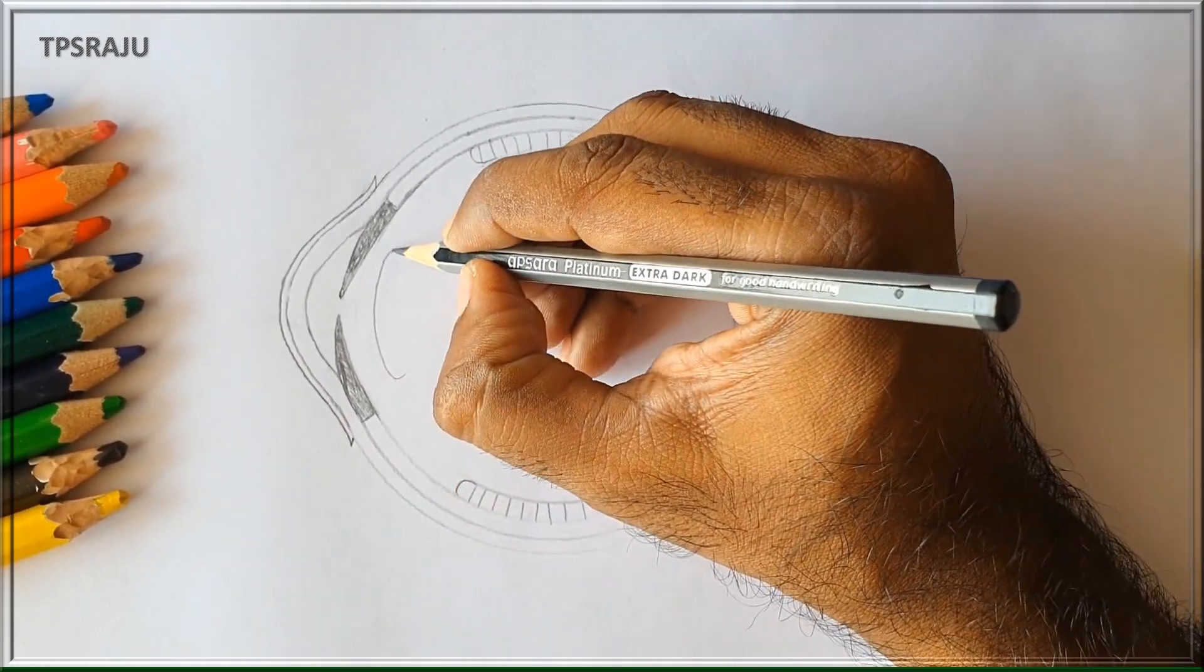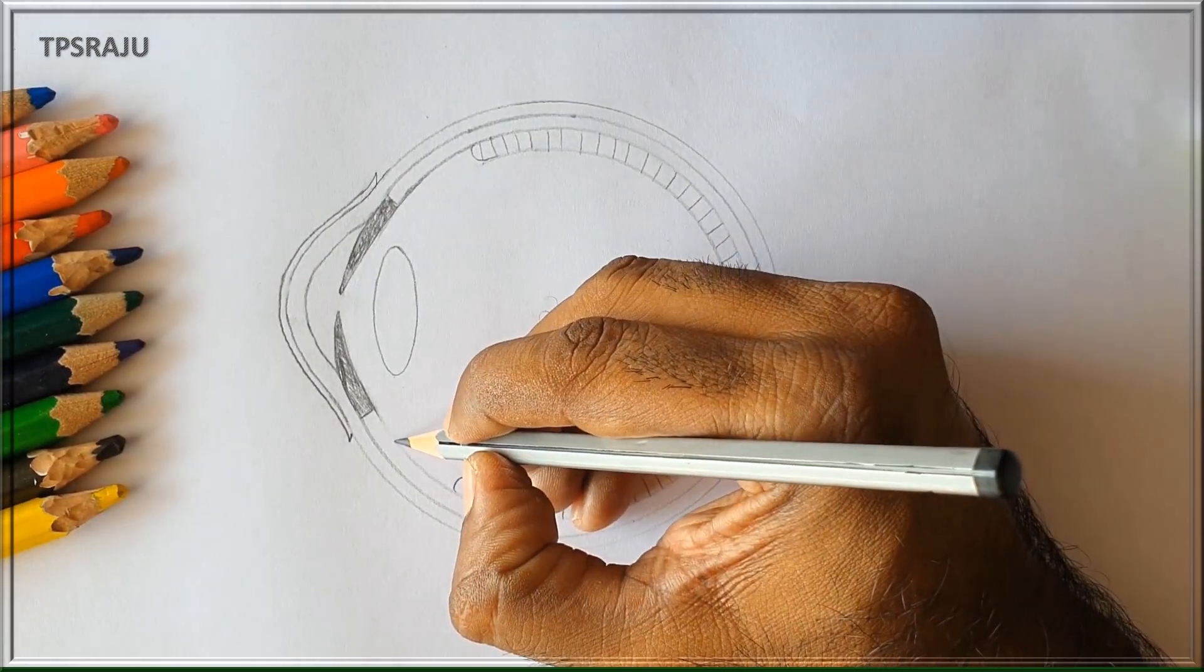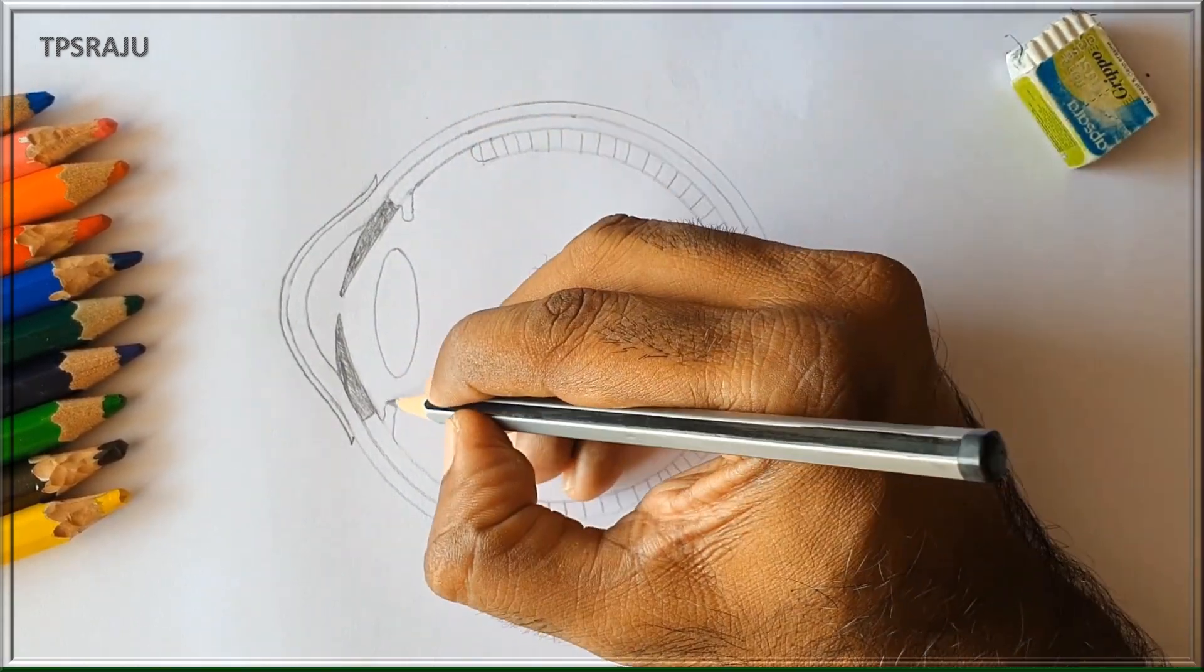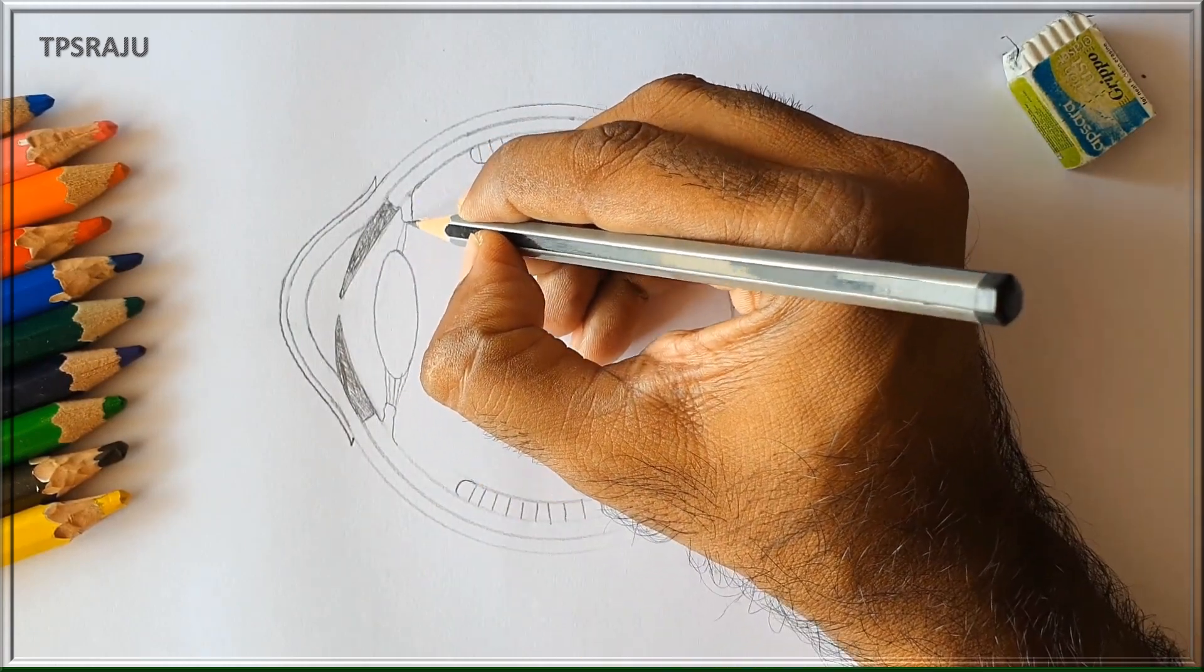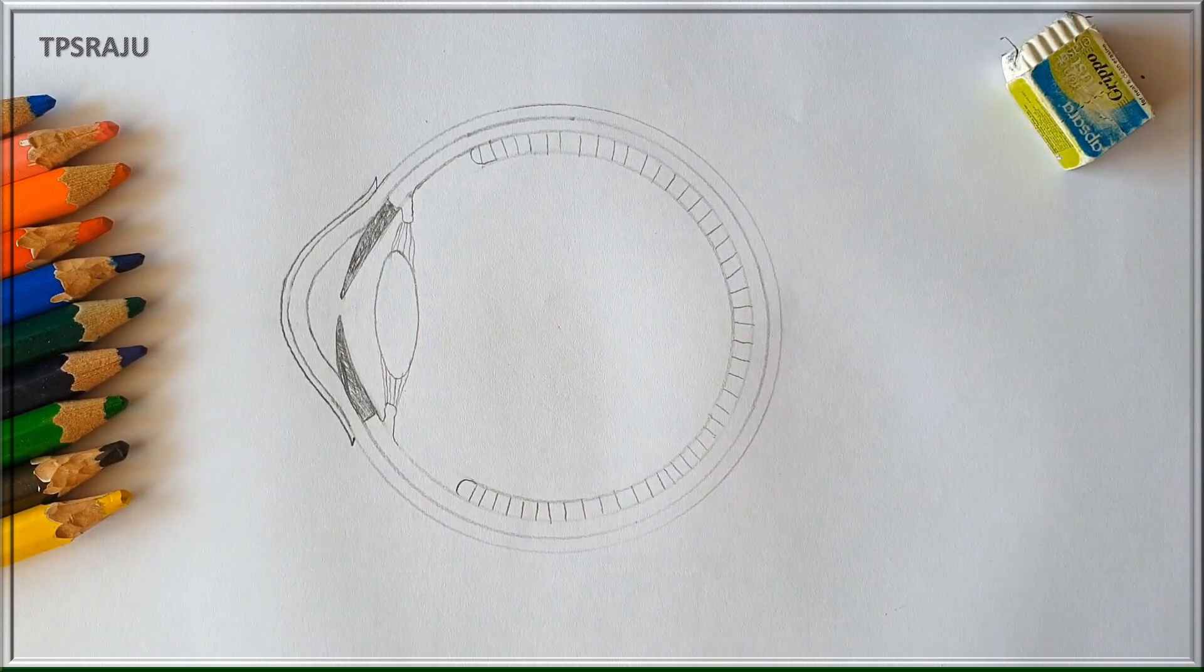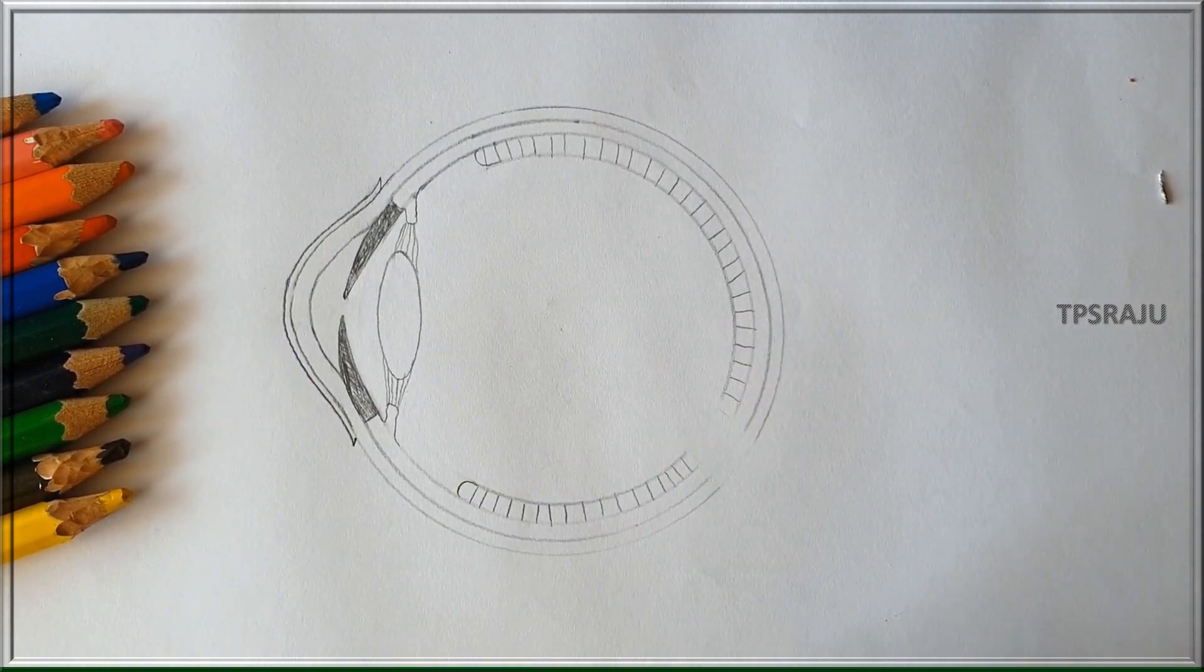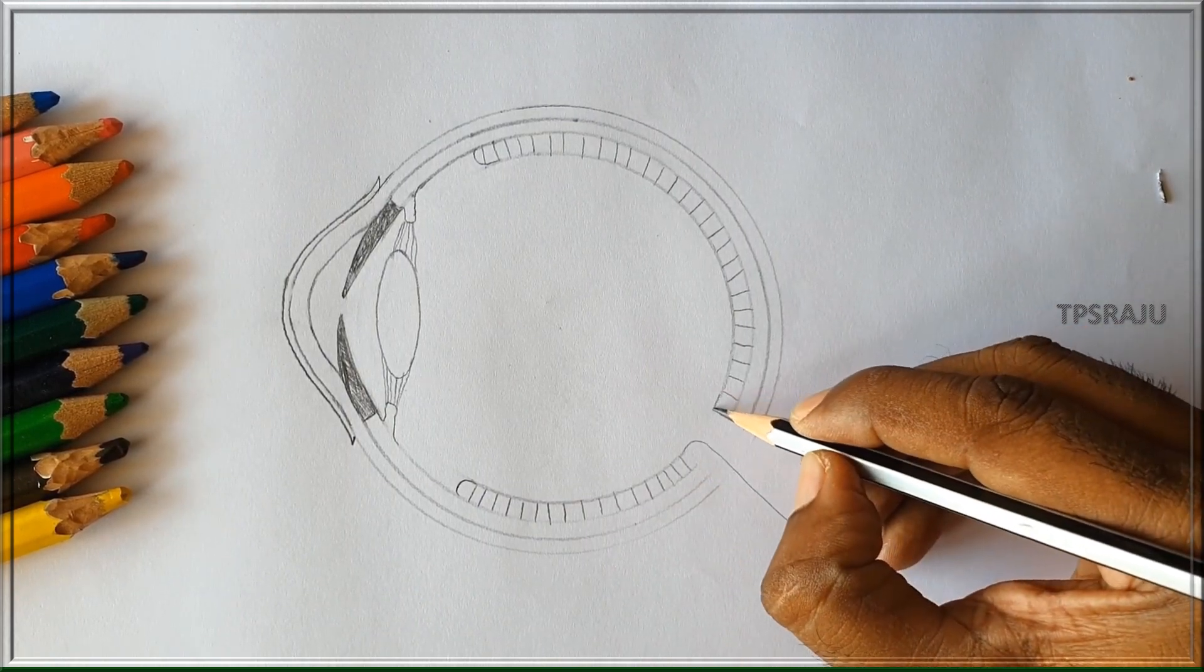Behind the pupil, there is a lens-like structure called the kattakam. Blood vessels from the raktapattalam are attached to this lens structure. Behind the taraka, at the back of the pupil, the danda kanalu and shenku kanalu are attached.